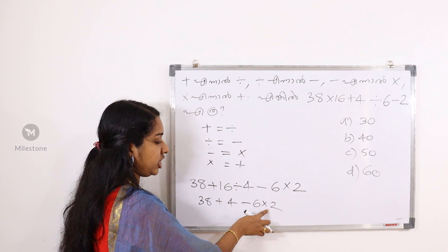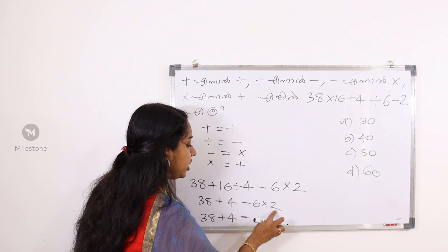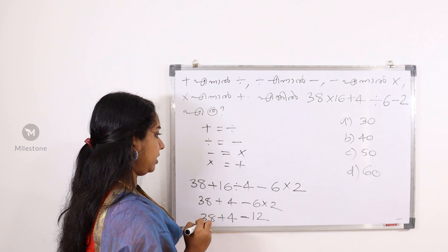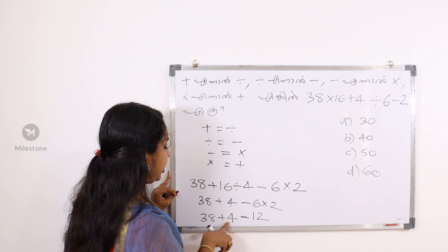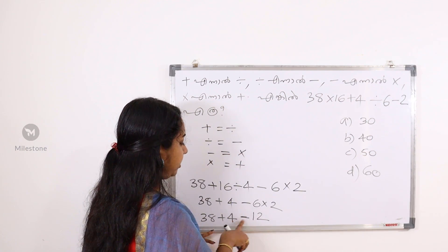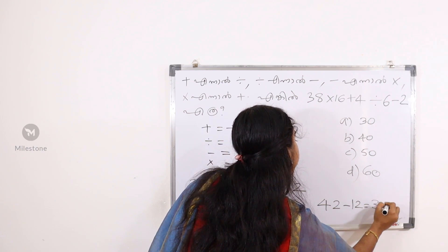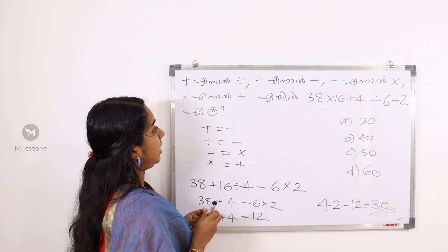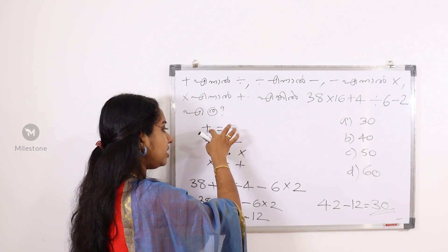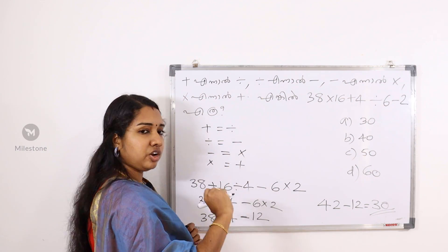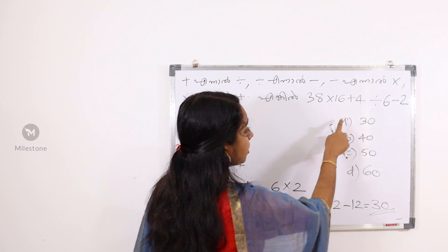We will use this as 0. So 38 plus 4 minus 6 into 2. What is the addition? 38 and 4 is 42. Then 42 minus 12. What is the answer? The answer is 30.